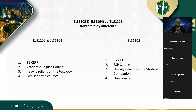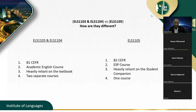We are not talking about B2, which is ELS 1105, but just some insights: 1105 is B2 CEFR — Common European Framework of Reference — and covers EAP (English for Academic Purposes) and ESP (English for Specific Purposes). When talking about 1105, it heavily relies on the student companion and portfolios, and there is only one course. The focus here remains chiefly on ELS 1103.